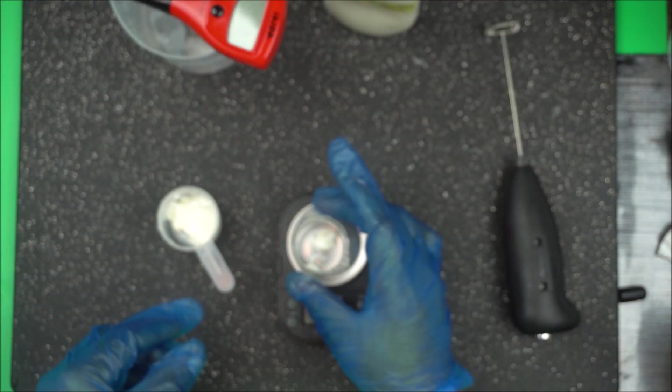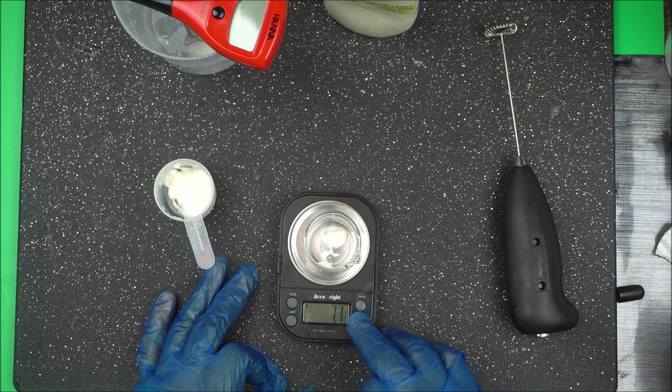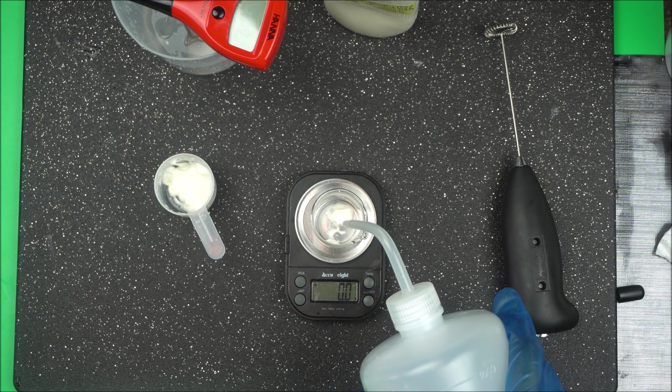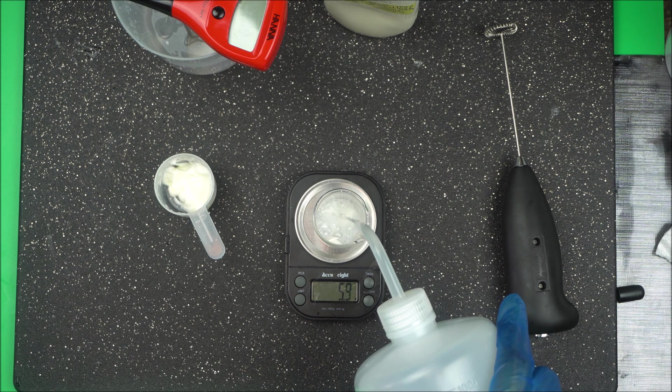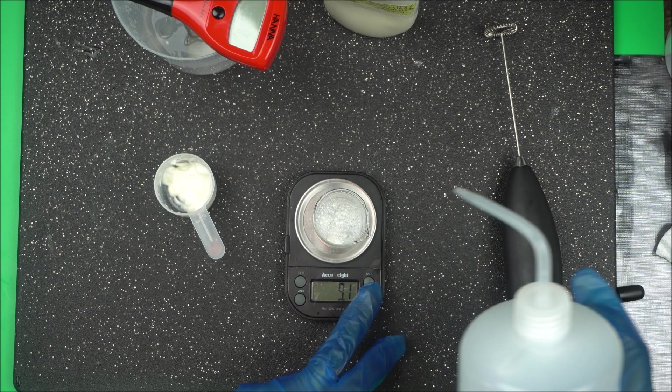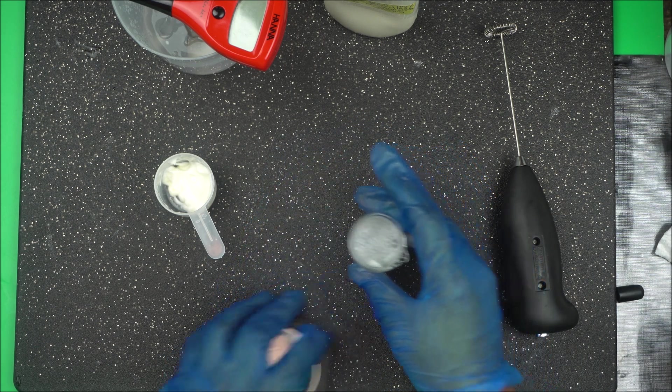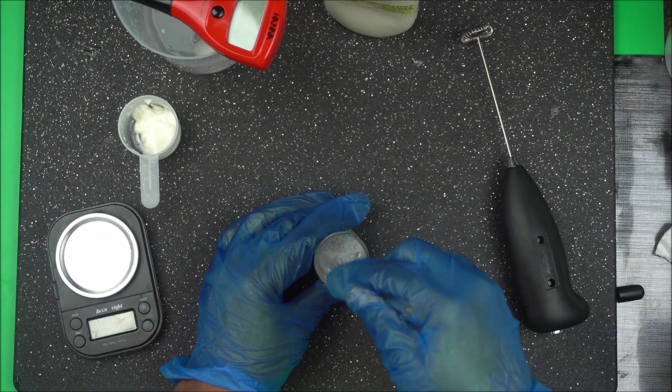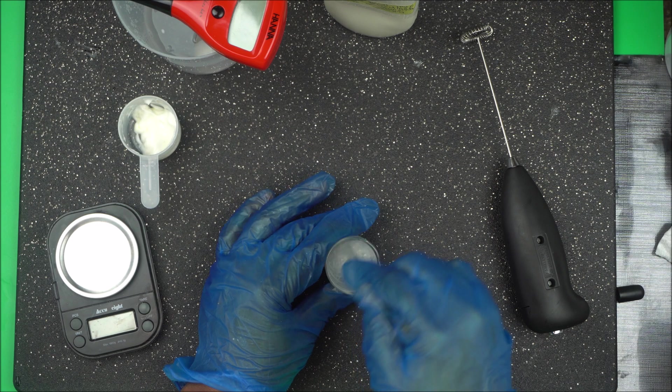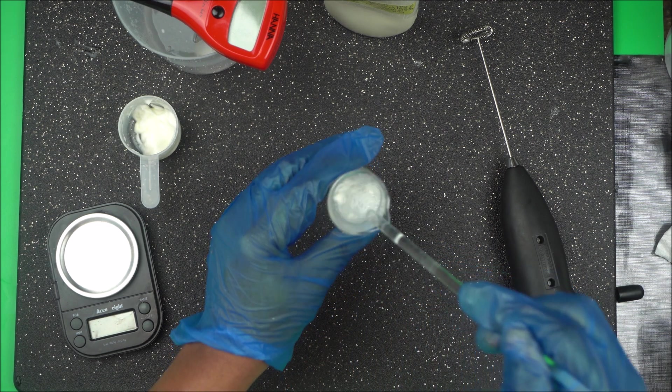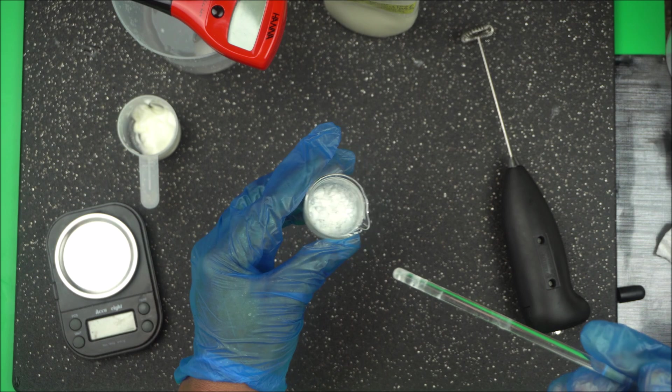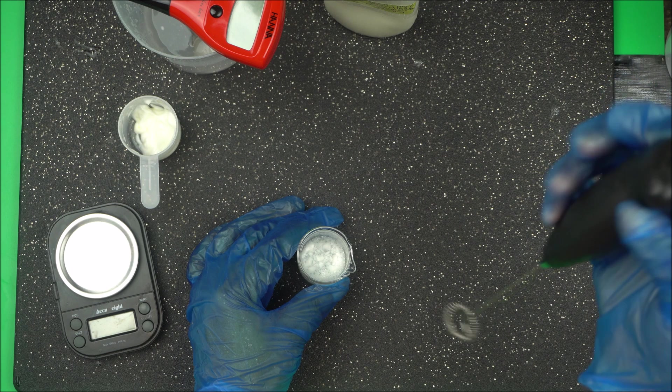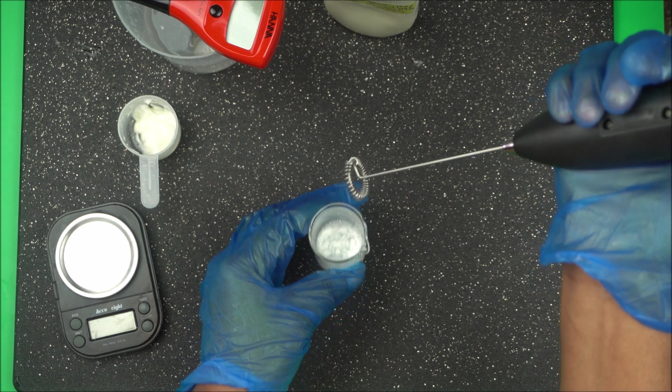We have one percent here, and we're going to add nine percent water to make it ten percent. Then you're going to make sure that it's properly diluted. This dilution will not do - you have to be able to mix it a little bit more. So I'm using a micro frother here to mix it a little bit more.